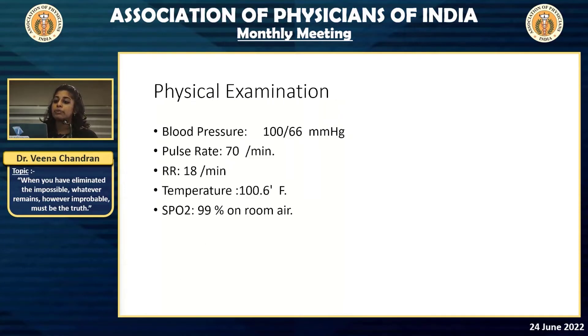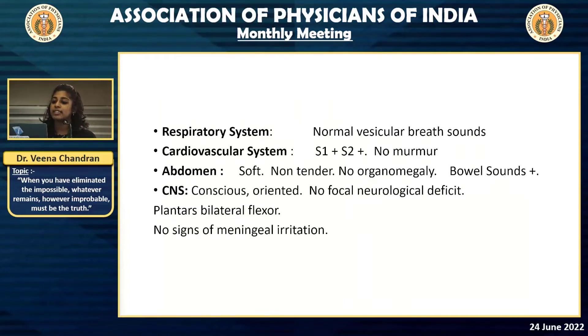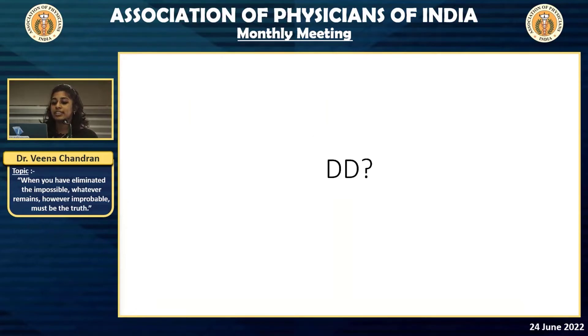On the primary physical examination, he was found to be febrile, while the systemic examination was found to be relatively non-focal. At this point, the question arises: what is the primary differential diagnosis? If anyone in the audience has any differential diagnosis that you can think of, you can shout it out.